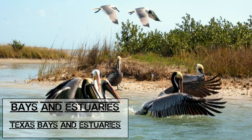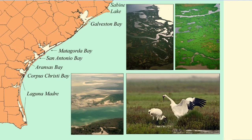Now let's talk about Texas Bays and Estuaries. Estuaries and bays form where rivers meet the ocean, mixing fresh water from far inland with salt water from the Gulf of Mexico. An estuary is defined as a partially enclosed body of water along the coast where one or more streams or rivers enter and mix fresh water with seawater. A bay is defined as a body of water partially enclosed by land that is directly open or connected to the ocean.